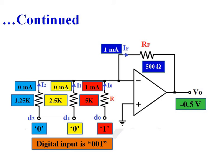Current flow through the 2.5k and 1.25k resistors is zero. Therefore feedback current IF equals 1mA plus 0mA plus 0mA, equal to 1mA. When 1mA flows through 500 ohms, the voltage drop is 0.5V. So output voltage V0 equals minus IF times RF, giving V0 equal to minus 0.5V.